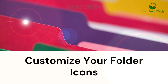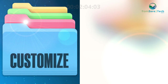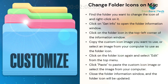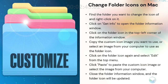Customize your folder icons. Find the folder you want to change the icon of and right-click on it. Click on Get Info to open the folder information window. Click on the folder icon in the top left corner of the information window. Copy the custom icon image you want to use, or select an image from your computer. Click on the folder icon again and select Edit from the top menu. Click Paste to paste the custom icon image, or select the image from your computer. Close the folder information window and the folder icon will be updated.